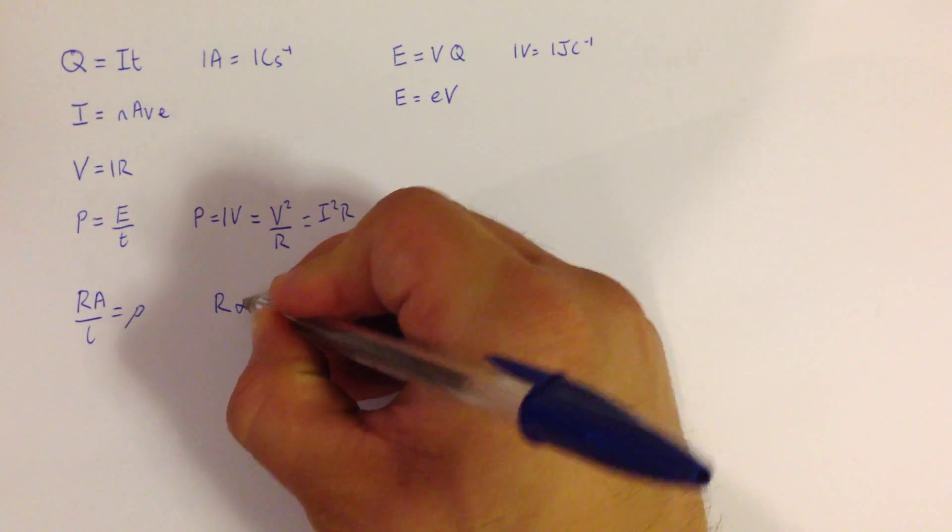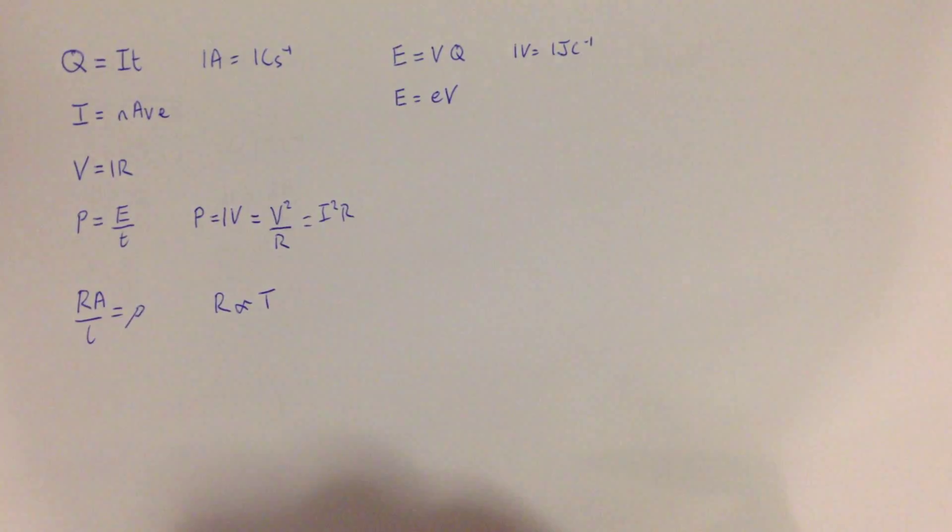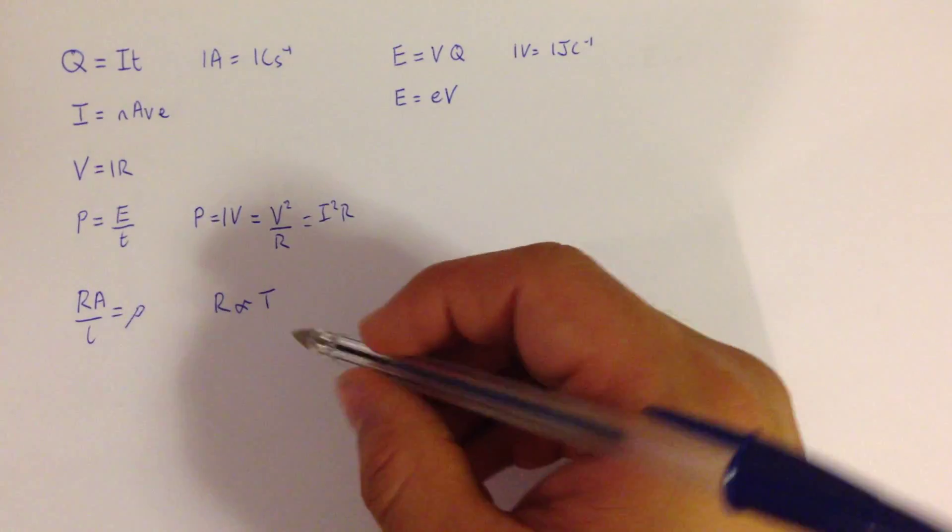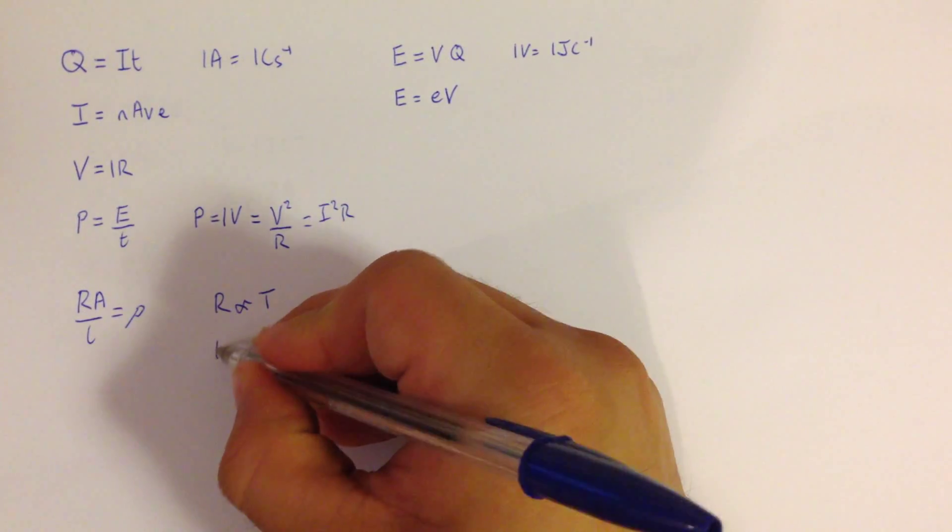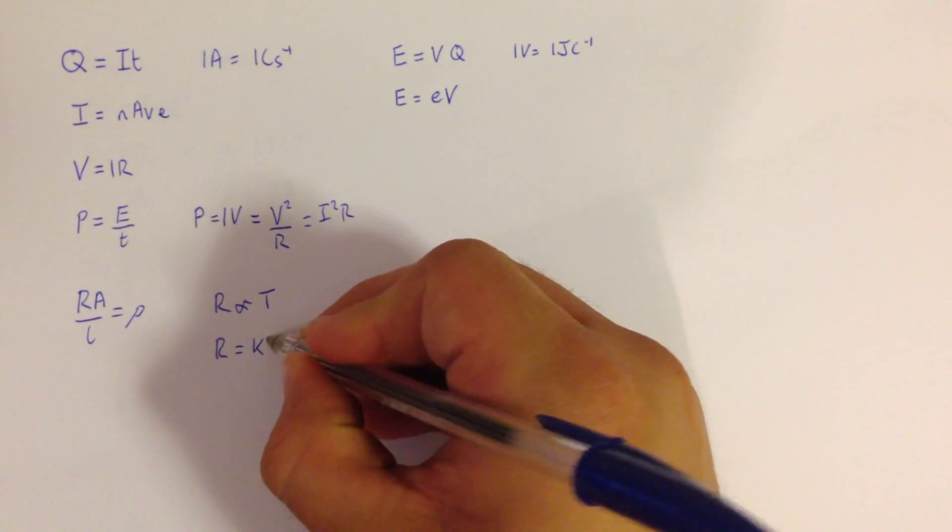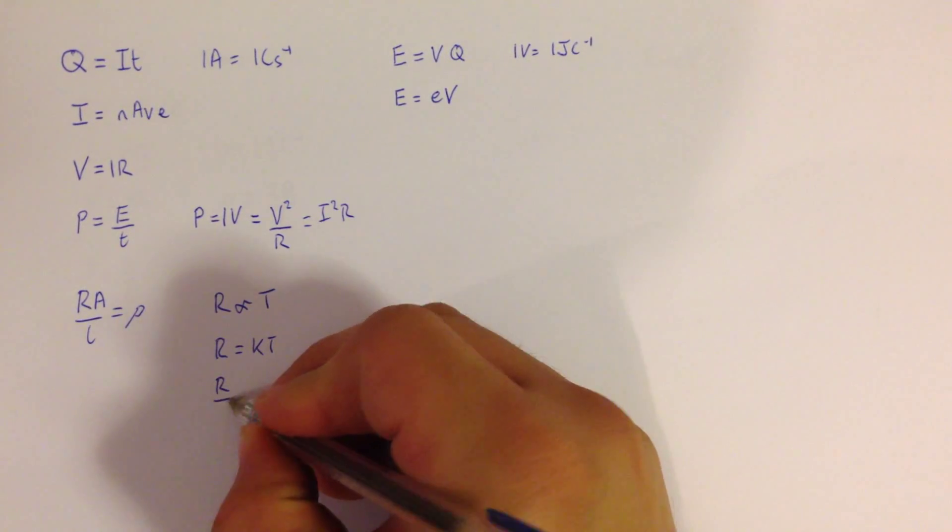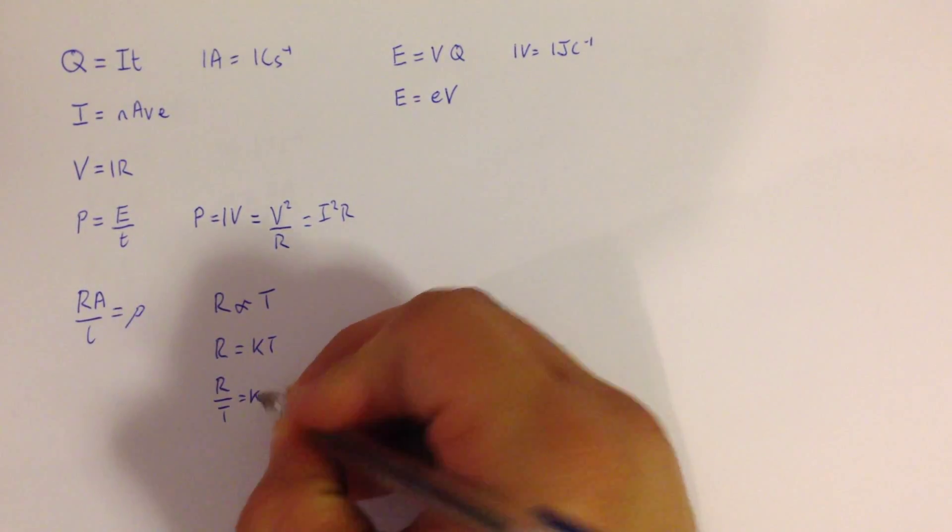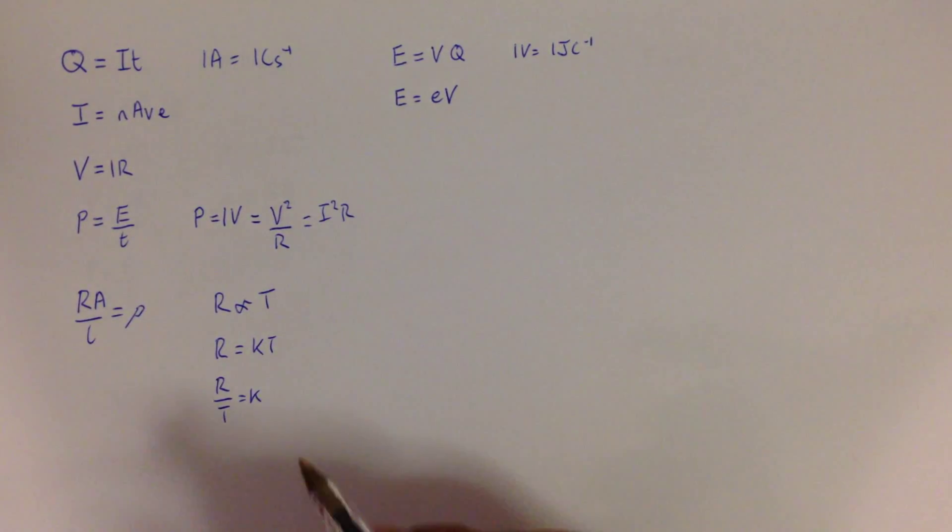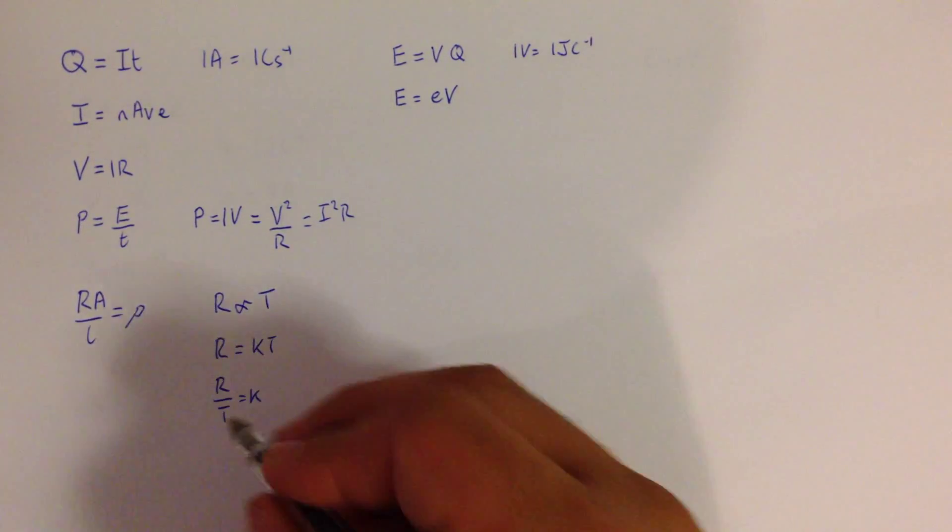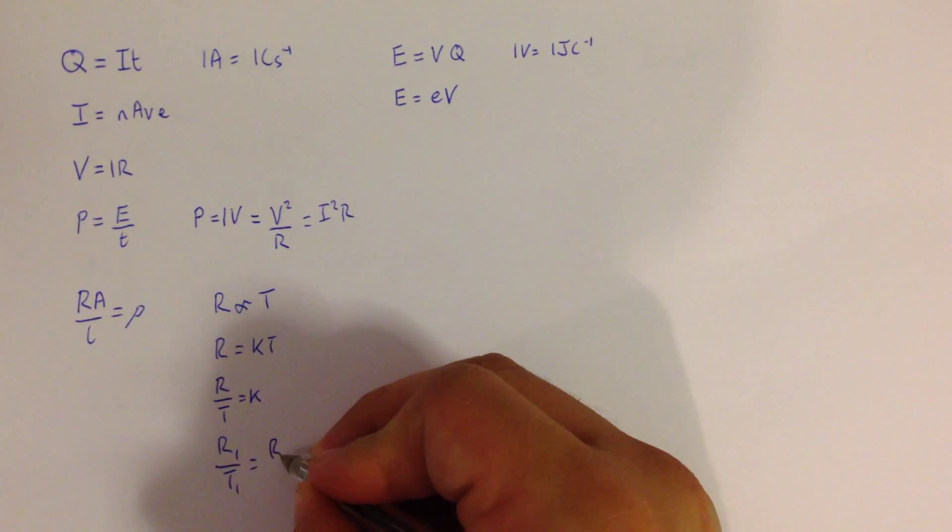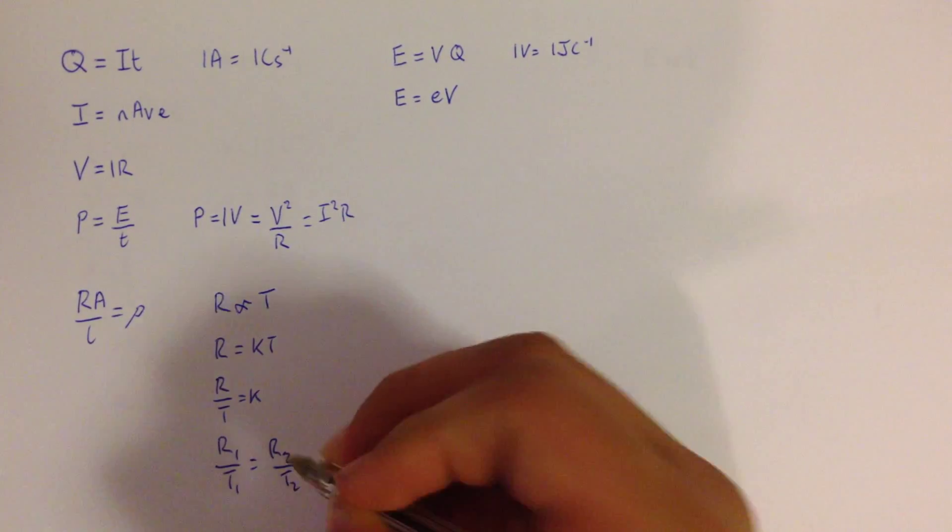Linked to this in this topic, we also get that resistance is directly proportional to temperature, which by following through the process for proportionality, we can get that R is equal to KT. If I then rearrange this to give me R over T is equal to K, where K is some constant, if I've got an initial set of conditions and a final set of conditions, I end up with the expression R1 over T1 is equal to R2 over T2.